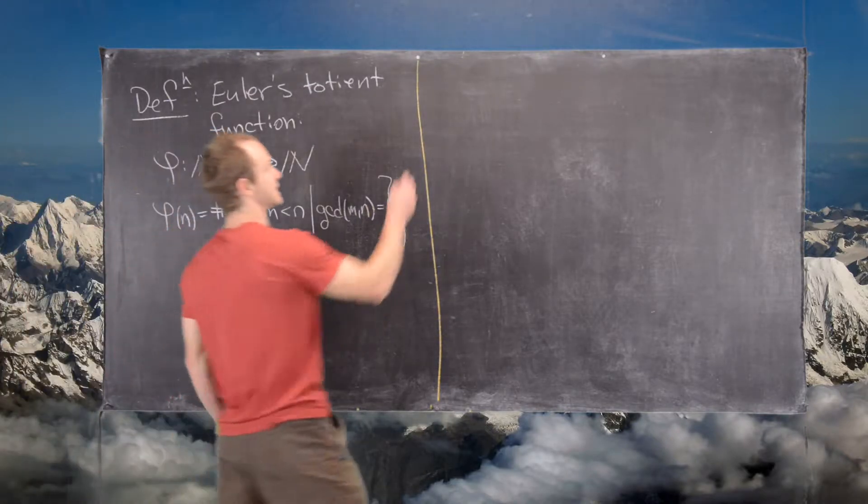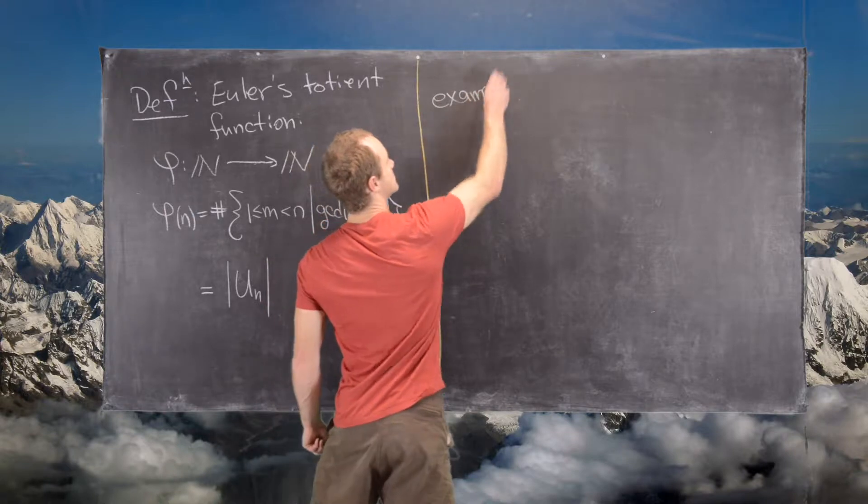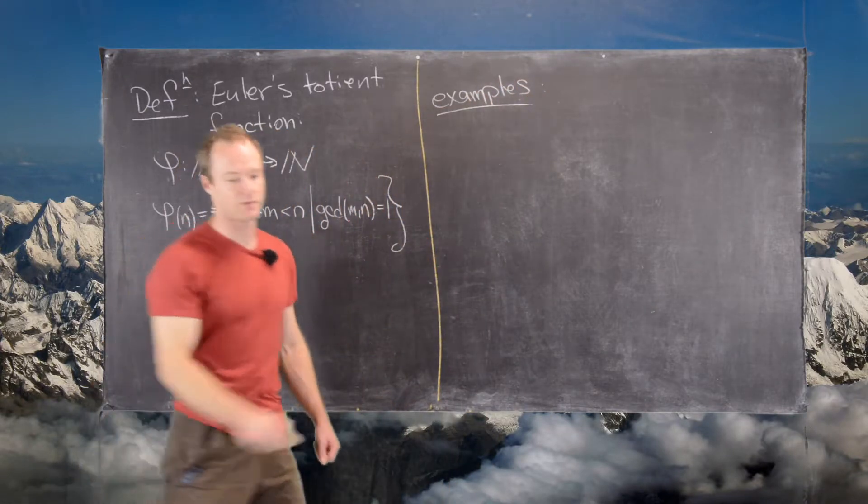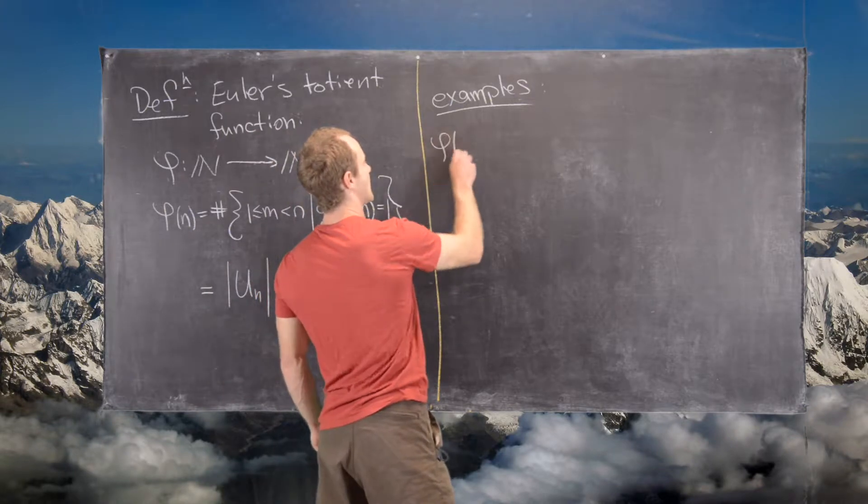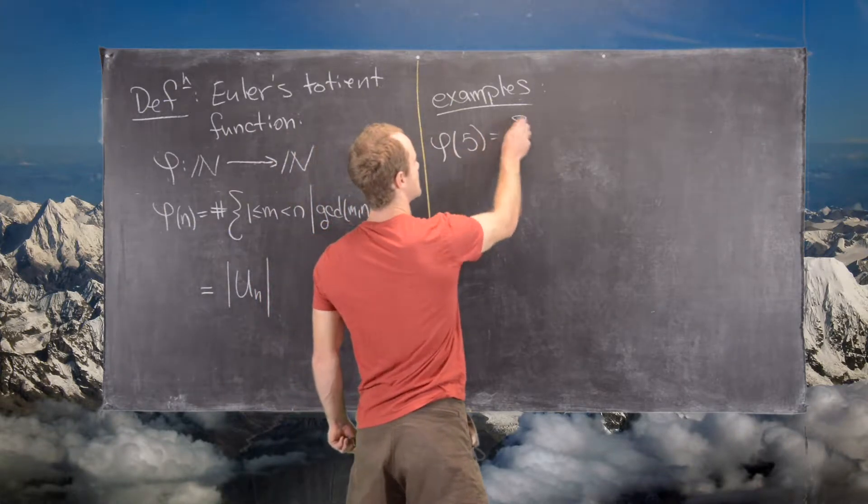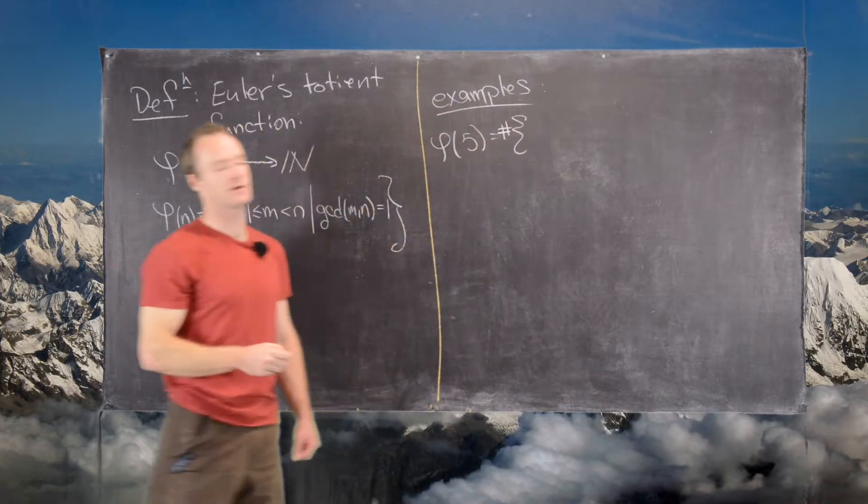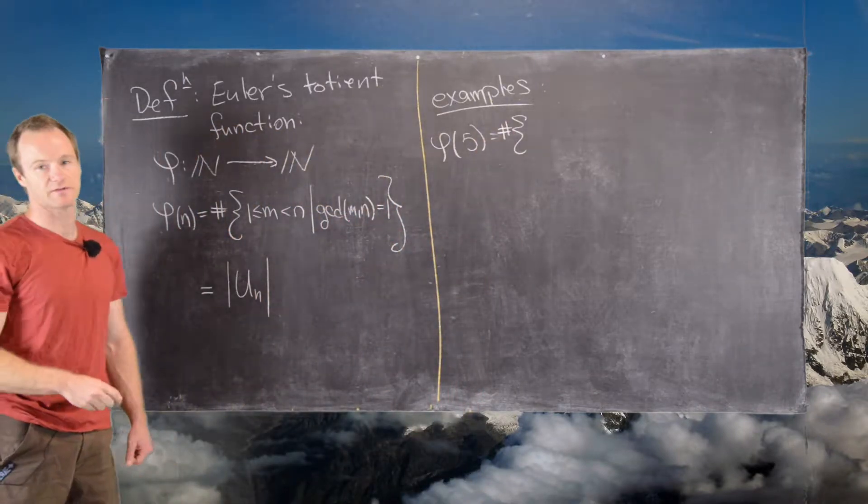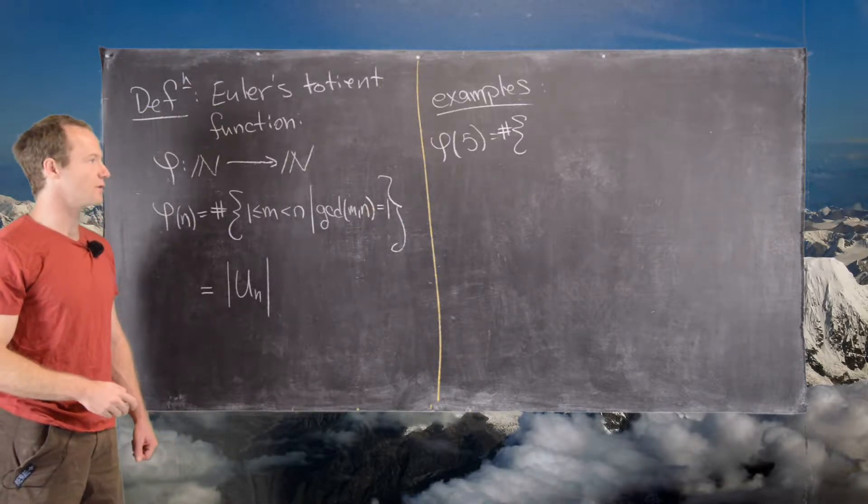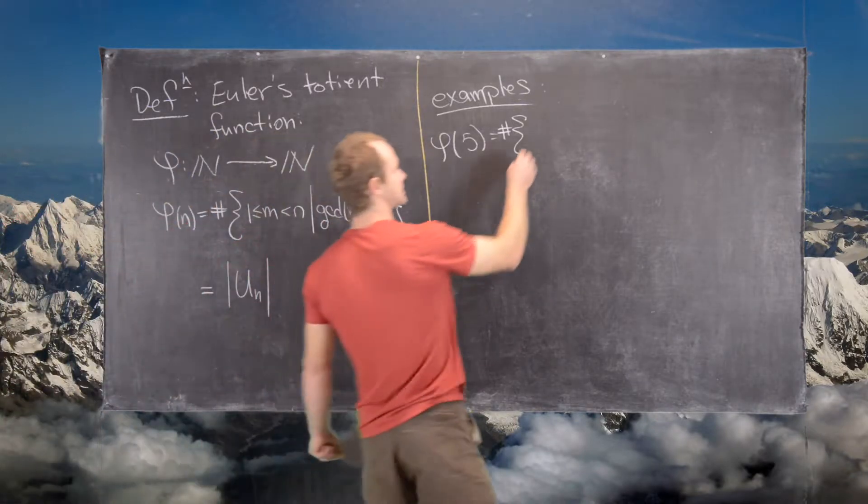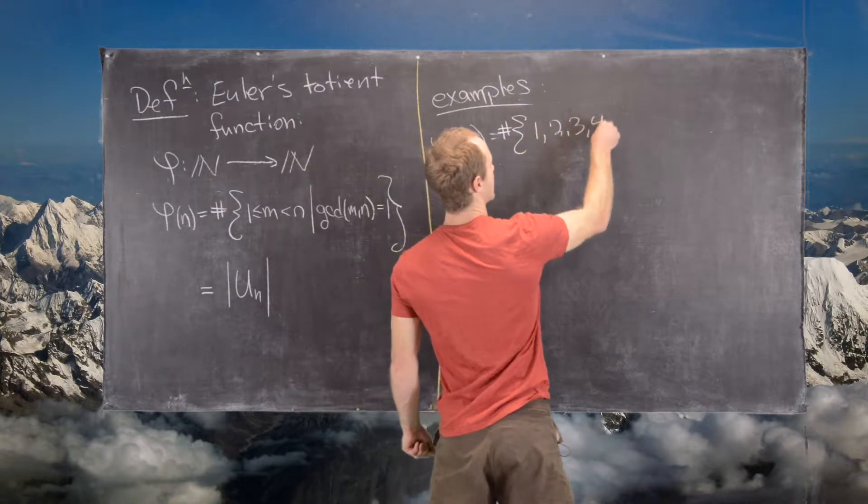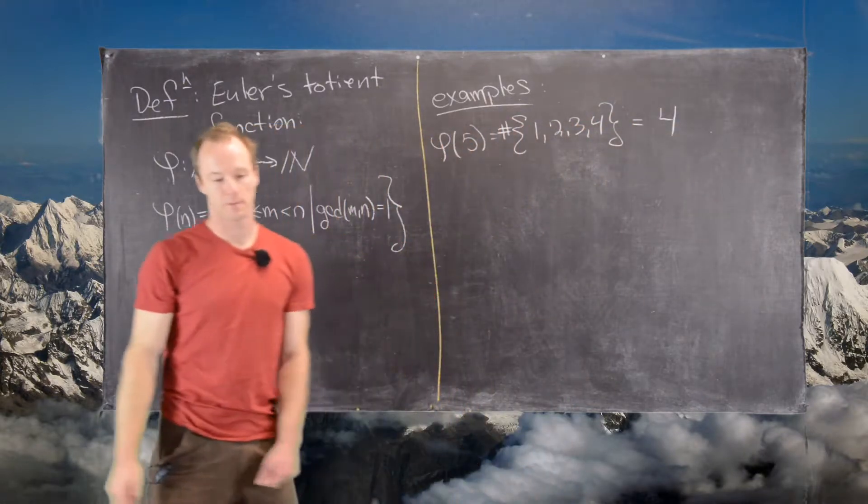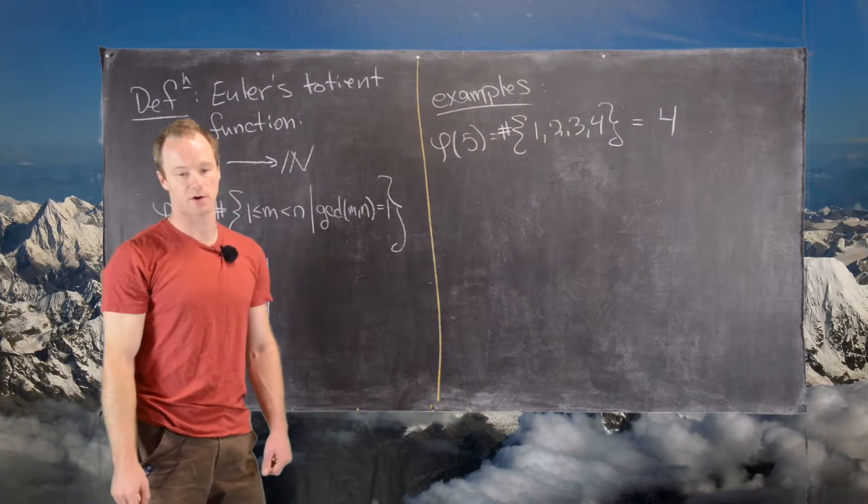So let's look at some examples. Let's maybe look first at phi of 5. So here we want to look at the number of positive integers that are smaller than 5 that are relatively prime with 5. So that gives us 1, 2, 3, and 4. And so that's obviously 4. So that means phi of 5 is 4.